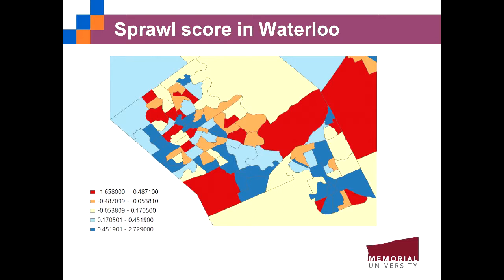The second example is the region of Waterloo. While the overall pattern is reasonable — Uptown Waterloo is most compact and the most sprawled areas are in large census tracts in peripheral areas — what is also interesting is that the university areas, where the University of Waterloo and Laurier University are located, are characterized as most sprawled. Probably because a census tract in these university areas has only one dissemination area inside, so some sprawl indicators such as the percentage of small areas or the coefficient of variation in population and employment density is zero, contributing to a higher sprawl score.